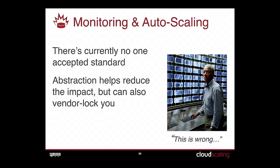The abstraction layers — RightScale and Scalr of the world — do have agents that run on each VM. They provide pre-baked images with agents already running that report back to a central web interface, handle all metrics and autoscaling information. Amazon has a nice way of exposing CloudWatch, and there's a patch on GitHub to pull CloudWatch into Nagios or Sensu — but it's 2014, do we really still need Nagios?